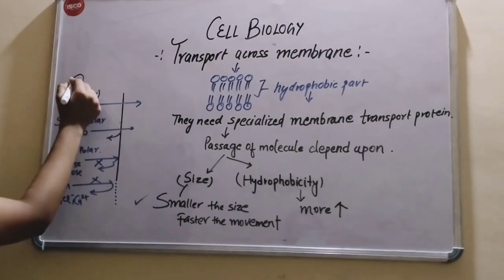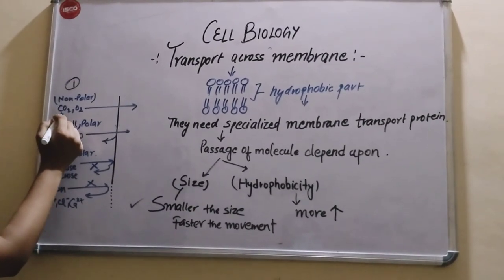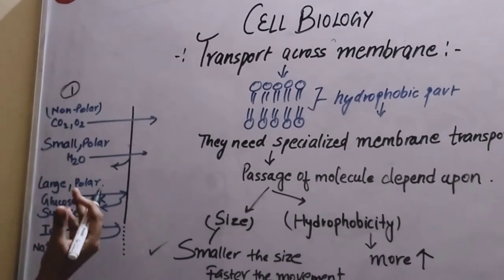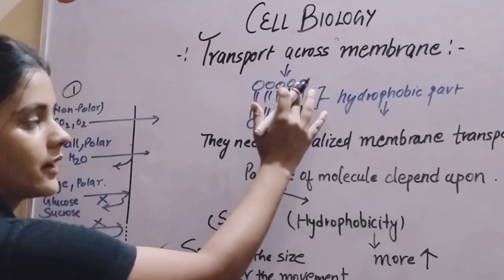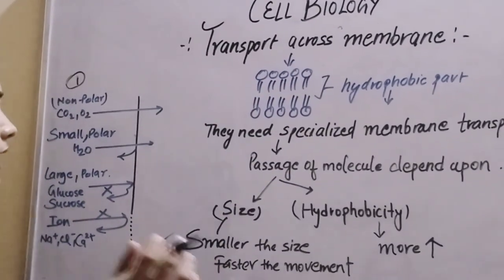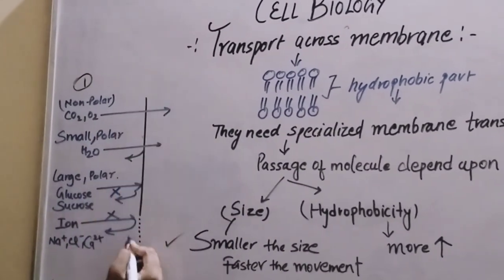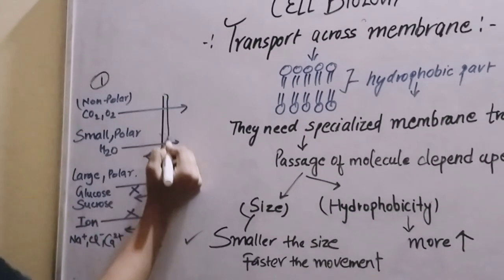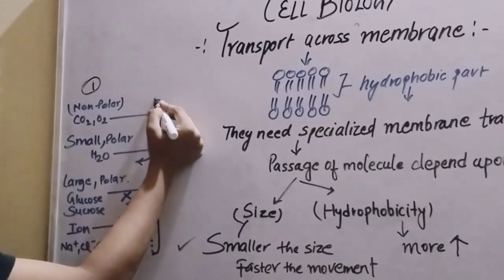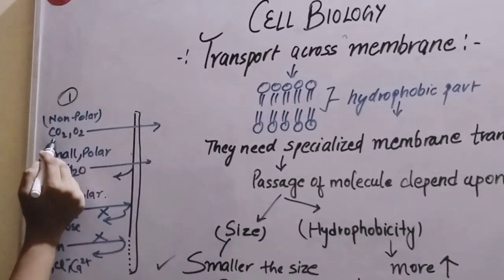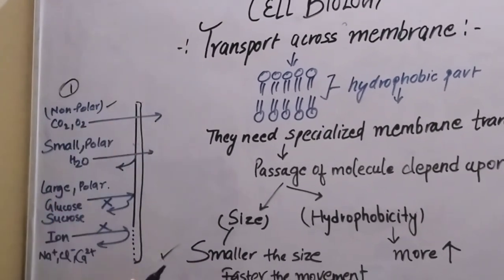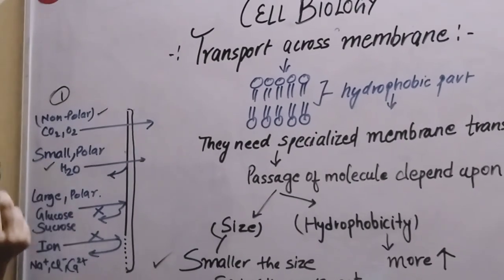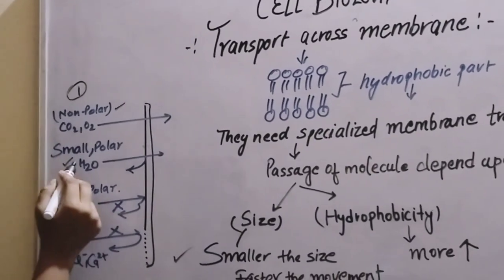The first example is carbon dioxide or oxygen, which are nonpolar. They will easily pass. The membrane allows nonpolar molecules like CO2 and O2 to easily pass because they are nonpolar and small.